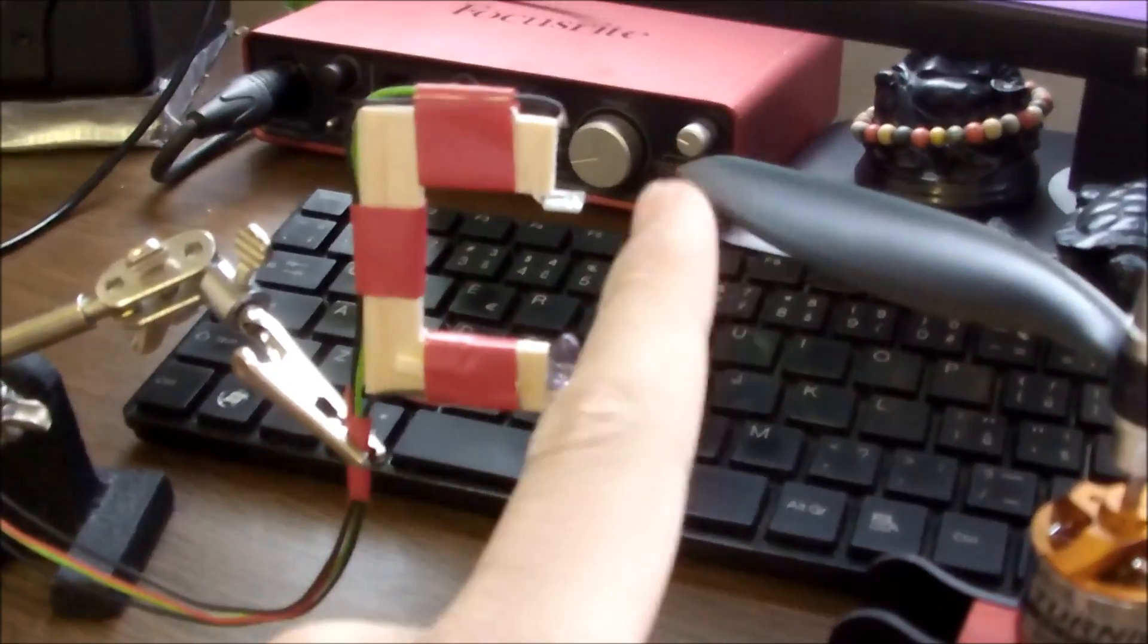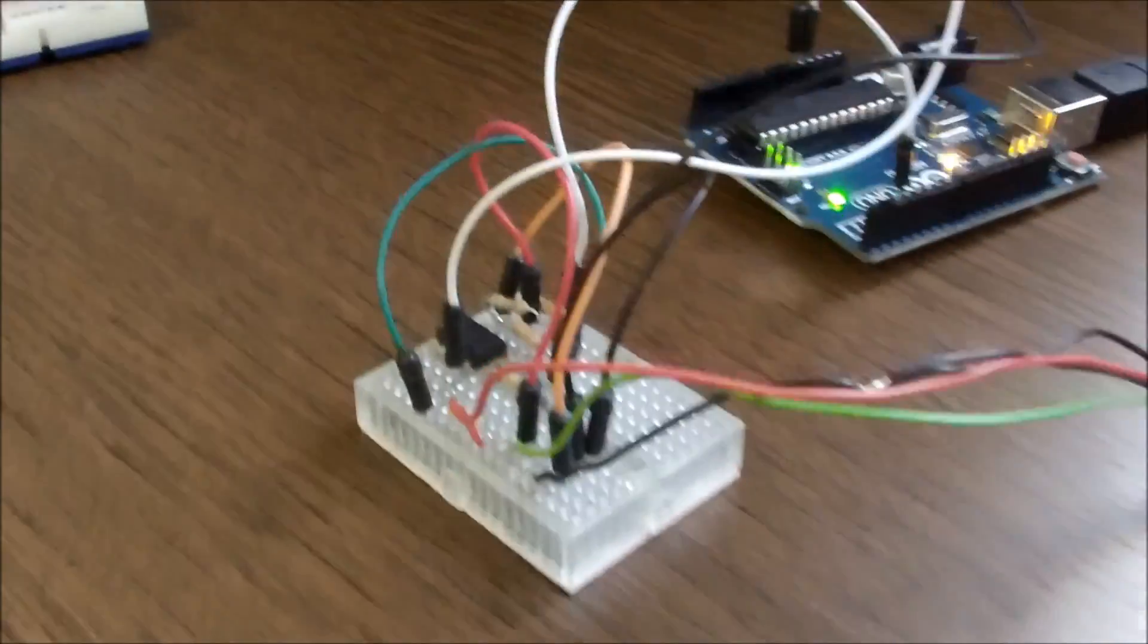It consists of an IR diode, a phototransistor, a bit of analog circuitry and the microcontroller itself.